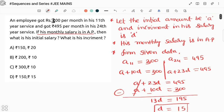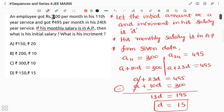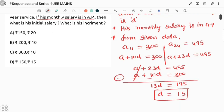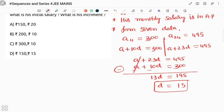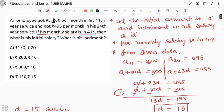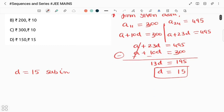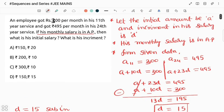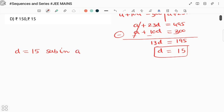So in this question it was given wrong. d value is 15. After that, what are they asking to find? The increment - we got the salary increment, d value. Next, substitute d equals 15 in a11, the 11th year service.